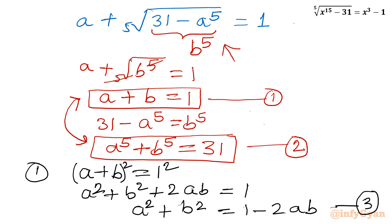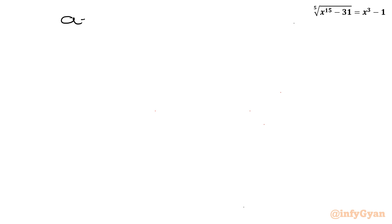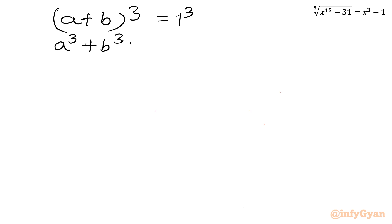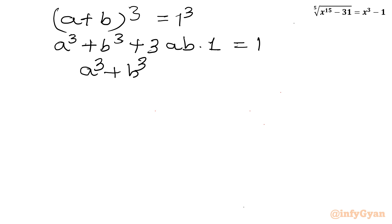Now I will cube both sides of equation 1: (a plus b) cubed equals 1. Applying the formula: a cubed plus b cubed plus 3ab(a plus b) equals 1. Since a plus b equals 1, this gives a cubed plus b cubed plus 3ab equals 1, so a cubed plus b cubed equals 1 minus 3ab — call this equation 4.